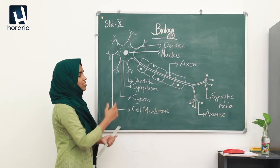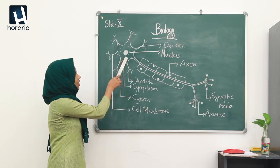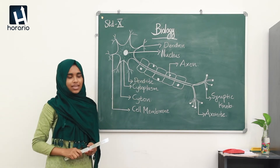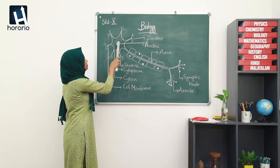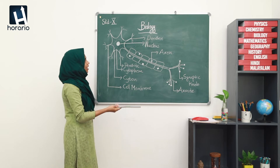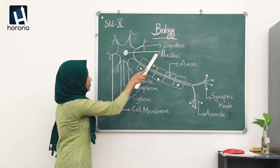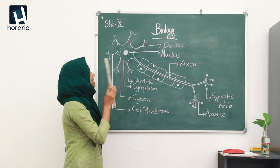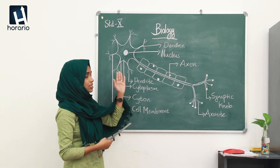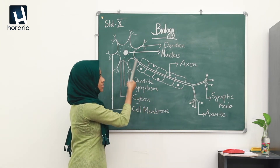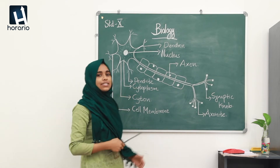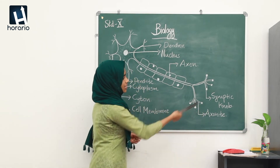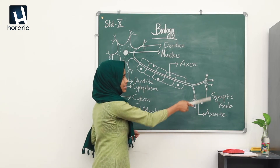So this is the structure of a neuron. To recap the main parts: the enlarged portion is called the cytone, consisting of cytoplasm, nucleus, and cell membrane. The short filament arising from the cytone is the dendron, and the branches of the dendron are called dendrites. The longest filament from the cytone is the axon, and its branches are axonites, which end at the synaptic knob.